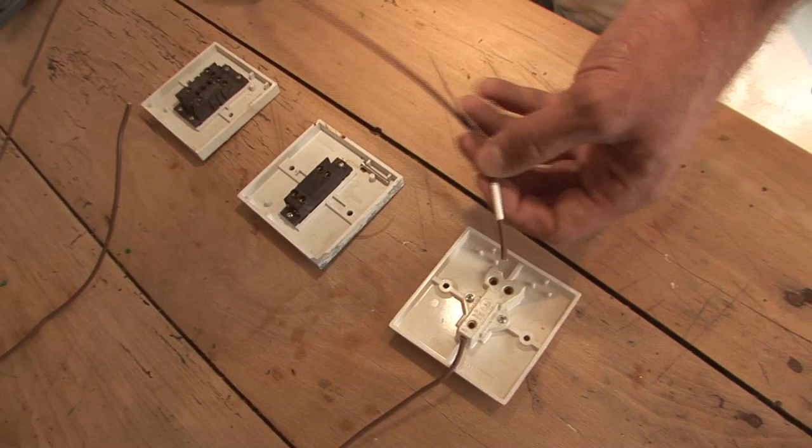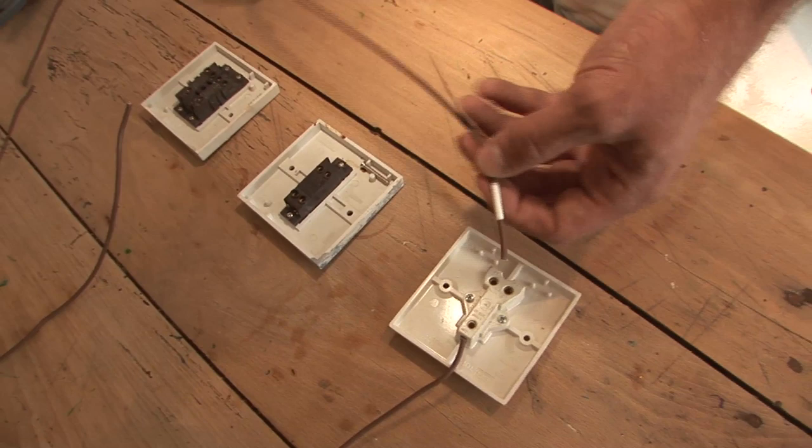And that's the basic connection of a three-way lighting circuit. We've obviously used different cables. You'll be using Twin and Earth or something like that, something similar to a domestic cable. We've used these singles just to make it a bit simpler for yourself when you're connecting.